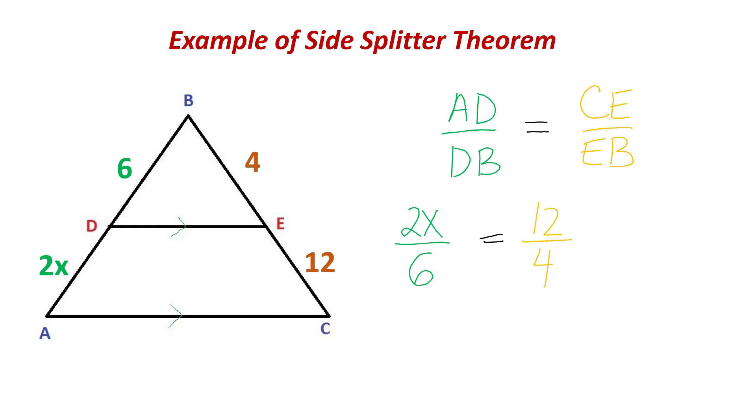So from this point, we just need to cross-multiply. 6 times 12, I get 72. And if I multiply 2X times 4, I get 8X. And I set those equal to each other. So to get X by itself, I divided both sides by 8. Here, X is equal to 9.